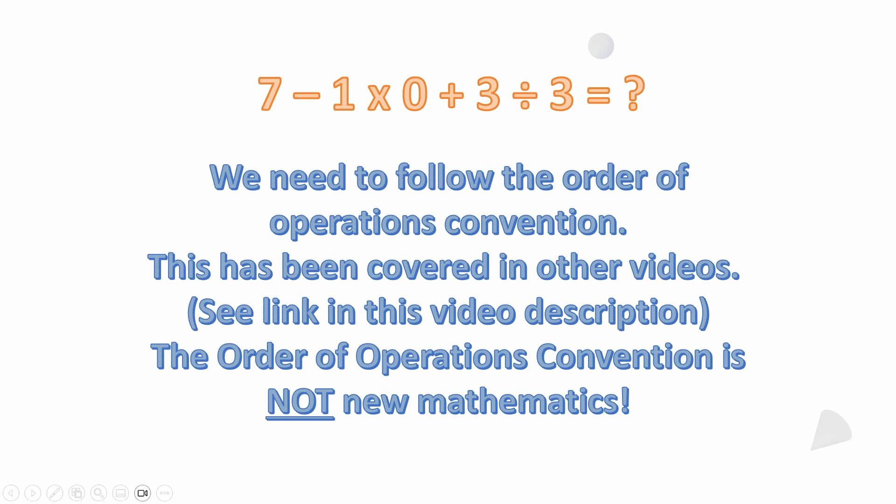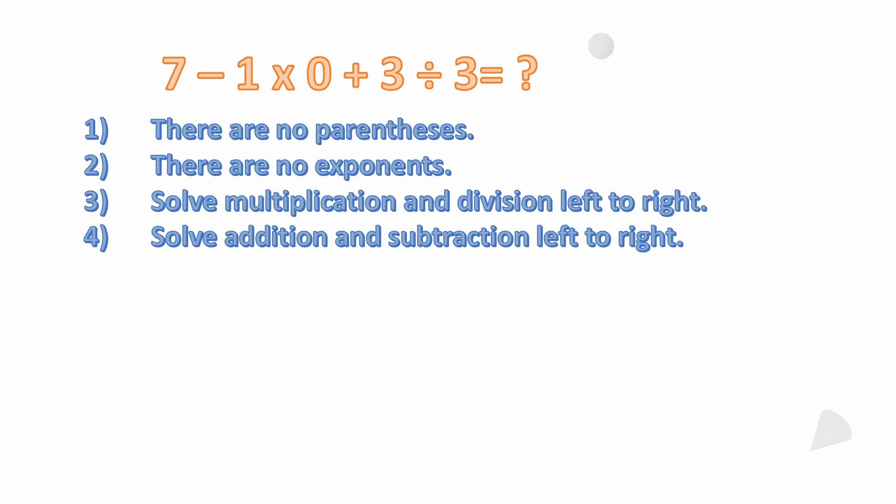Let's get started. If you are familiar with the order of operations or need to refresh, you can look at those other videos. Basically, first we look for parentheses—some countries might refer to them as brackets. There are no parentheses. Number two, there are no exponents; you might refer to those as orders or indices. It all means the same thing.